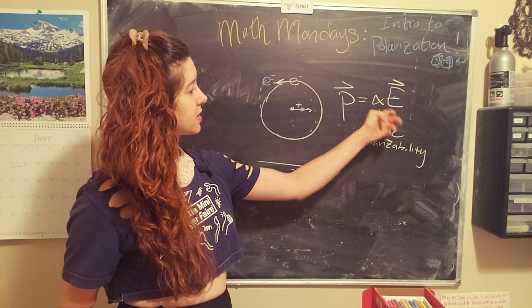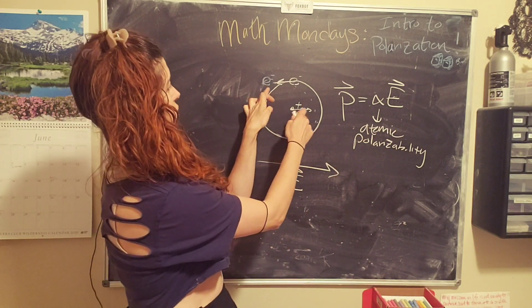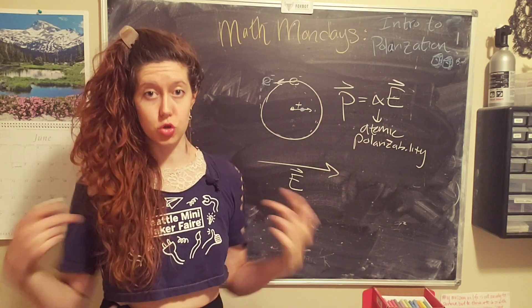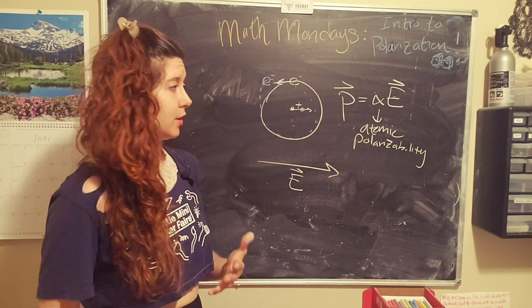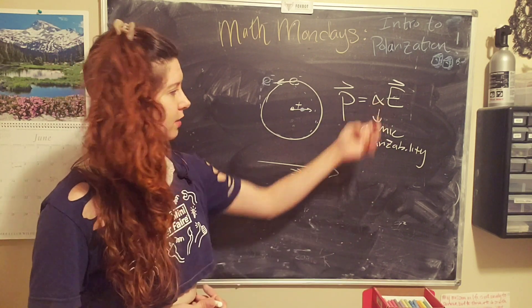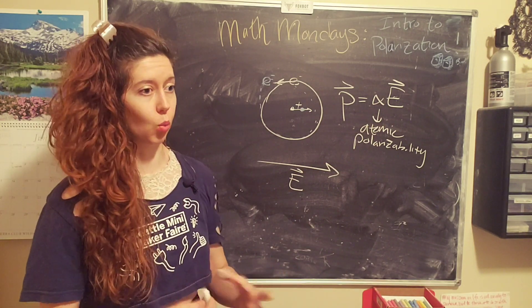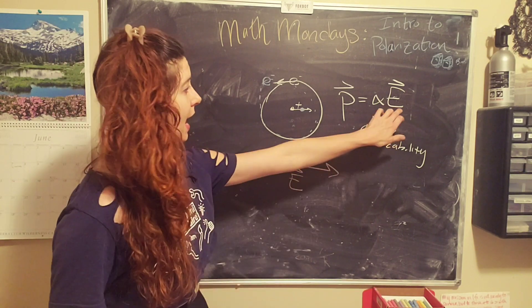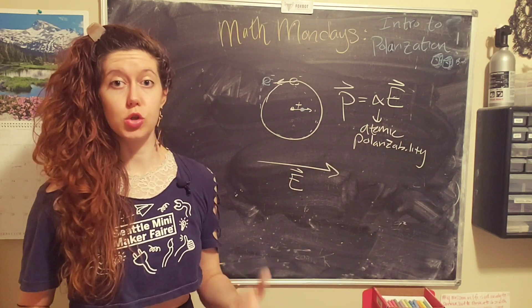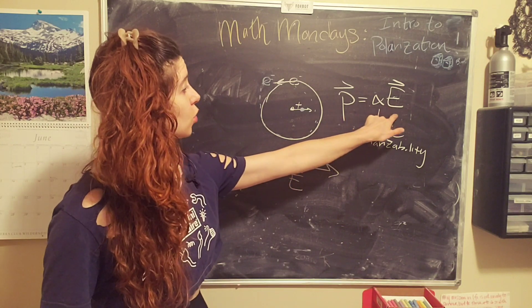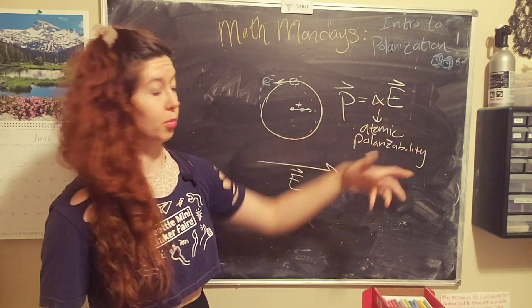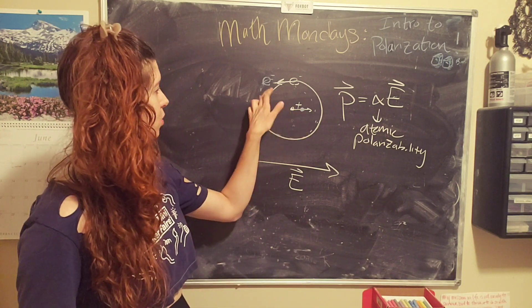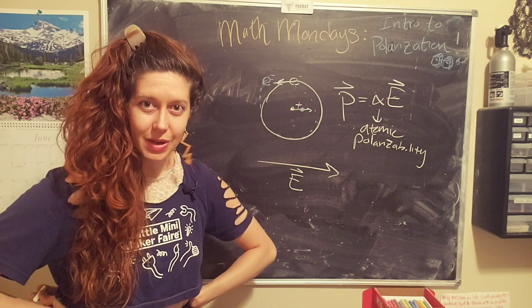So basically, this says that the separation distance between the electron cloud and the nucleus depends on the structure of the atom, you can kind of think about like, well, how many electrons it has, and where the electrons are in the electron cloud. And then it's also proportional to the strength of the electric field. So if you increase either one of these, or both of them, you will increase the separation distance between the electron cloud and the nucleus. Pretty cool.